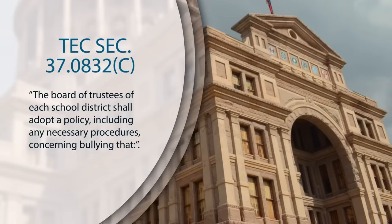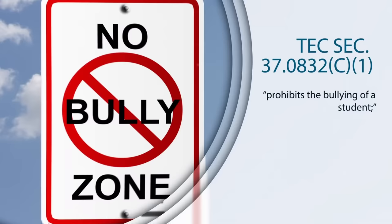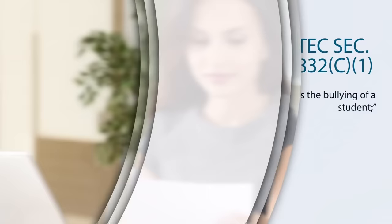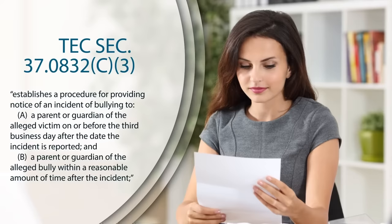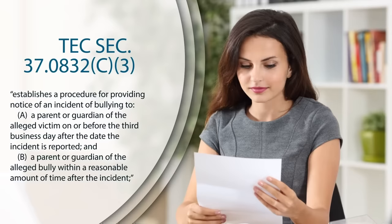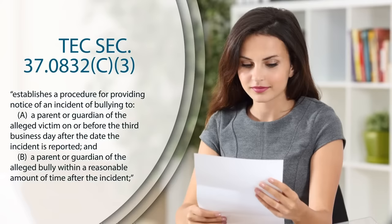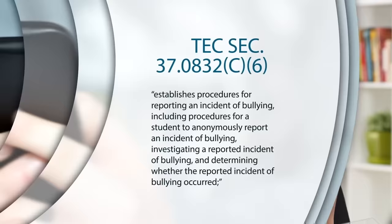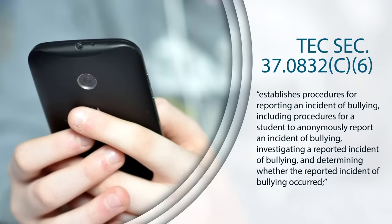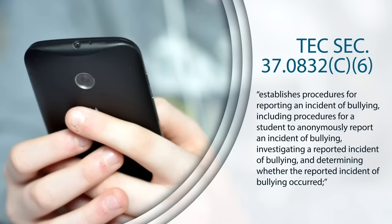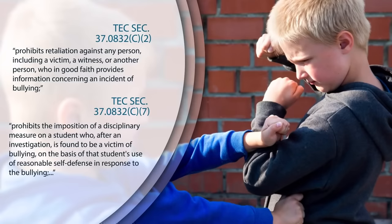Schools and school districts have several mandates under Texas Education Code Chapter 37.0832. Schools must prohibit bullying, with an expectation that a district shall adopt a policy, including necessary procedures, that prohibits bullying including cyberbullying. Schools must notify the parents of the alleged victims of bullying within three working days — amended by the 85th Legislature from a reasonable amount of time to on or before the third business day after the date the incident was reported. Schools must also notify the parents of the alleged bully within a reasonable amount of time. Schools must establish a system for anonymous reporting of bullying, and SB 179 specifically states there must be at least one avenue of reporting for students that is completely anonymous. Schools must also prohibit retaliation against anyone who, in good faith, provides information about bullying.